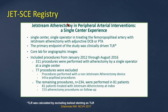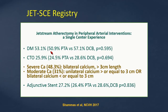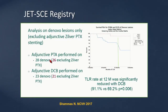In our own single-center, single-operator JetSCE registry, 234 JetStream cases were performed: 81 at index and 154 on follow-up. Over half the patients were diabetic, CTO was present in 25.9%, severe and moderate calcium in nearly 79%, and adjunctive stenting in 27%. In the de novo subset, freedom from TLR with JetStream plus drug-coated balloon was 91.1% at one year, versus 69.2% without. We strongly believe you need to add drug-coated balloon to achieve good long-term results.